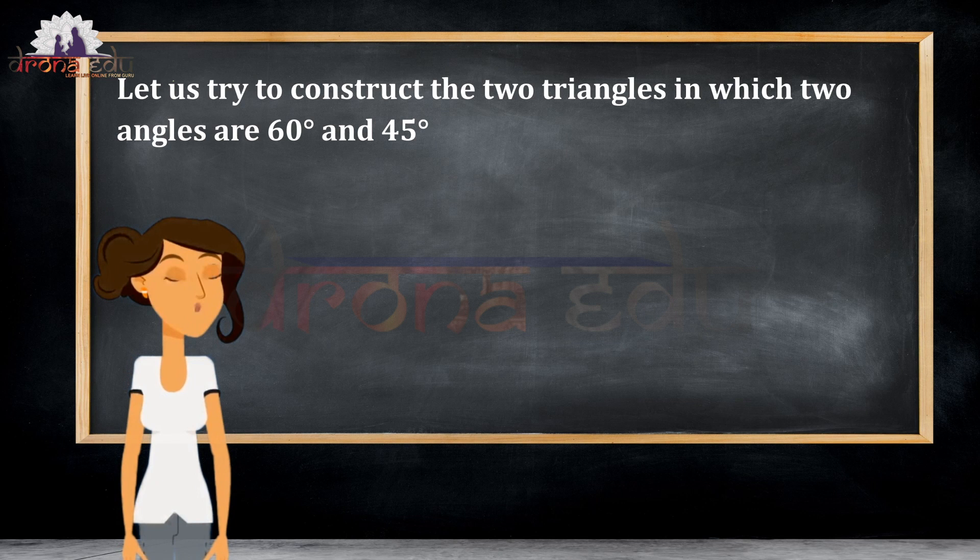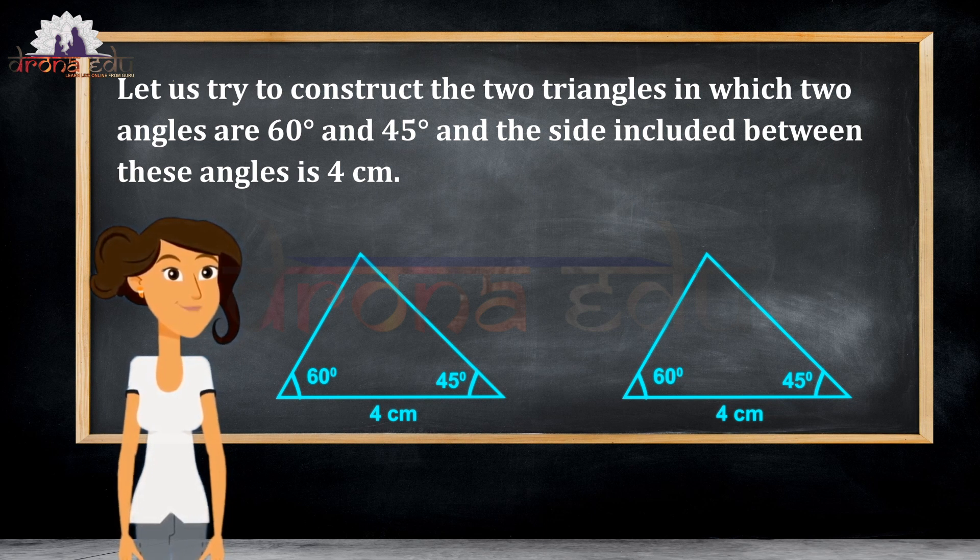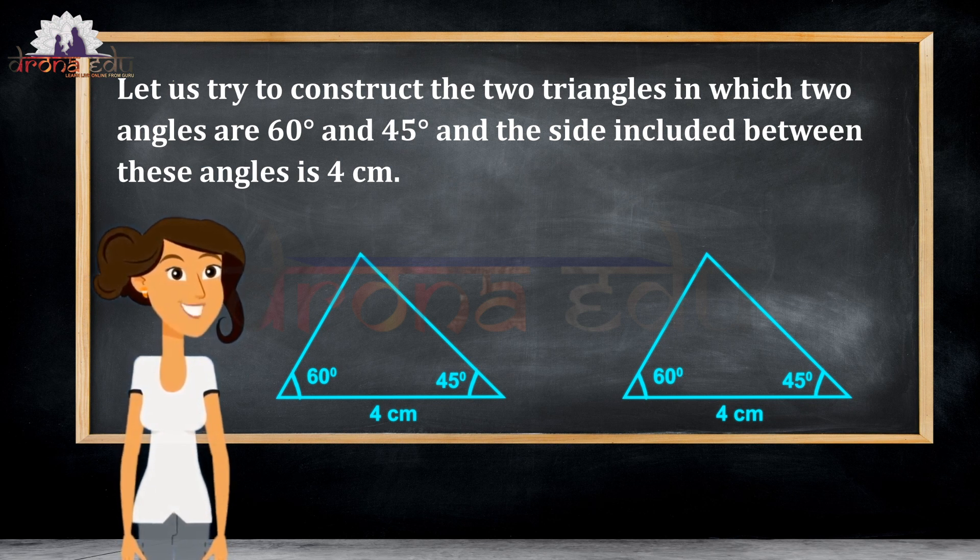Let us now try to construct two triangles in which the two angles are 60 degrees and 45 degrees, and the side included between these angles is 4 centimeters.